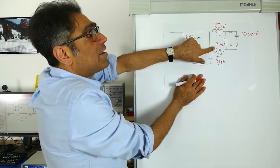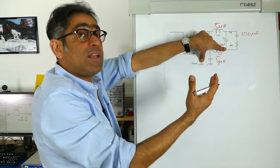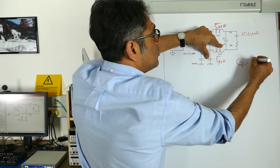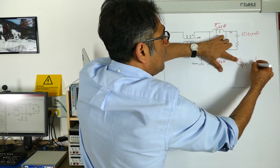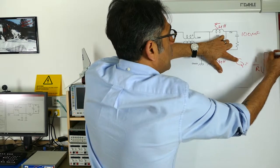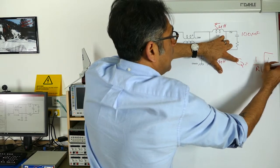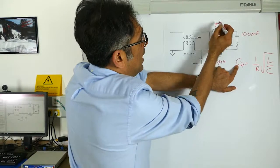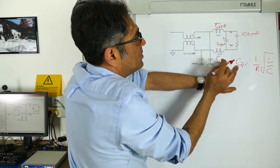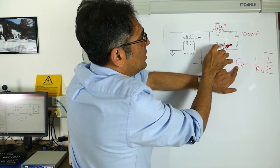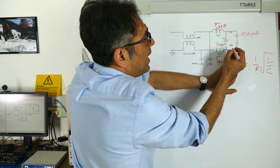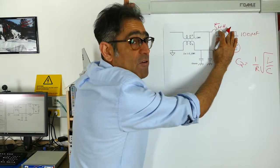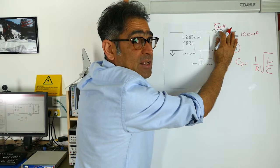For a Q of around one, we know the equation for Q is equal to one over R times the square root of L over C. We know L is 10 microhenries, we know C is 20 microfarads, so we can calculate the value of R. This portion of the circuit is now complete.